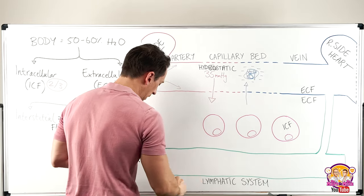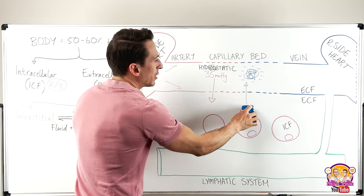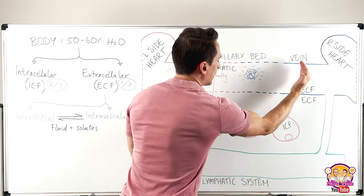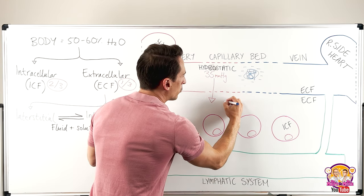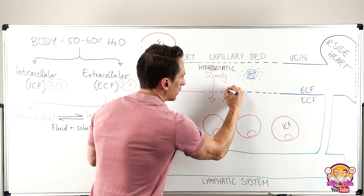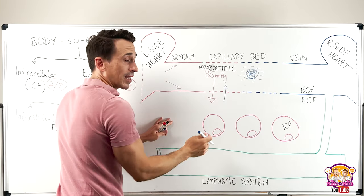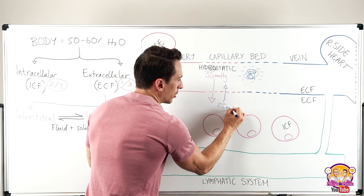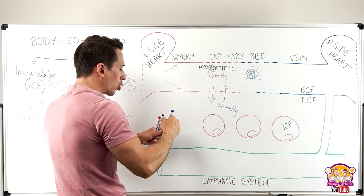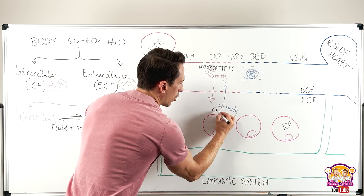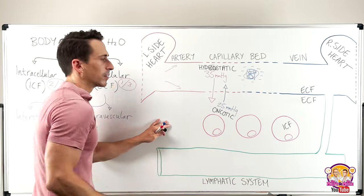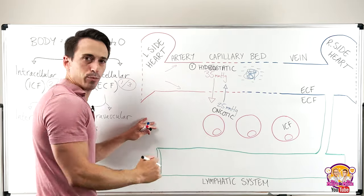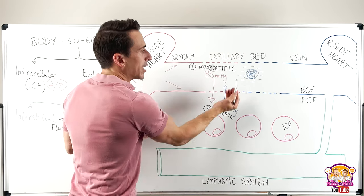On the arterial end of the capillary bed, this inward pull due to the proteins is 25 millimeters of mercury, and it's called oncotic pressure. So we've got two pressures: number one, hydrostatic — the outward push; number two, oncotic — the inward pull.